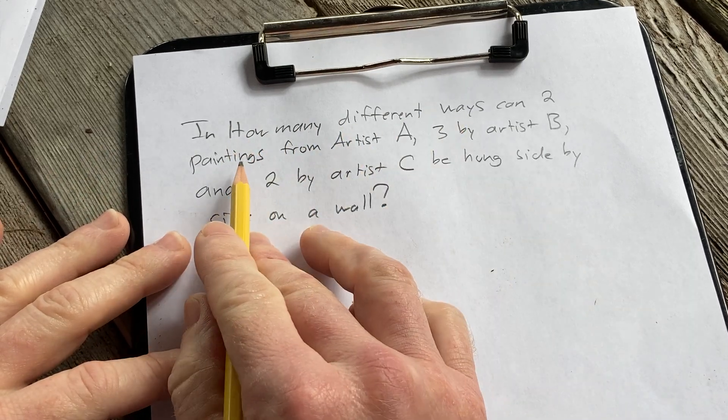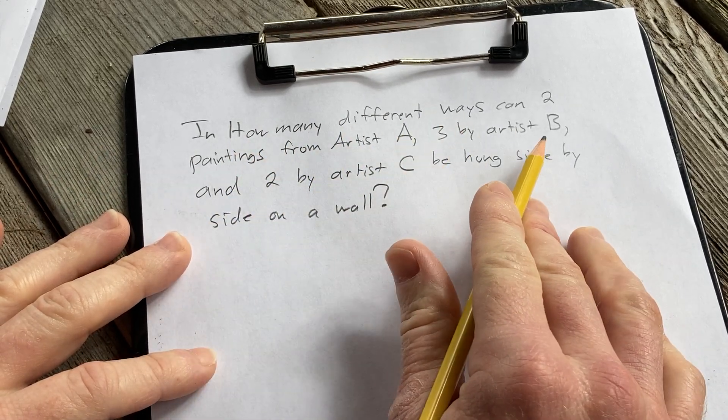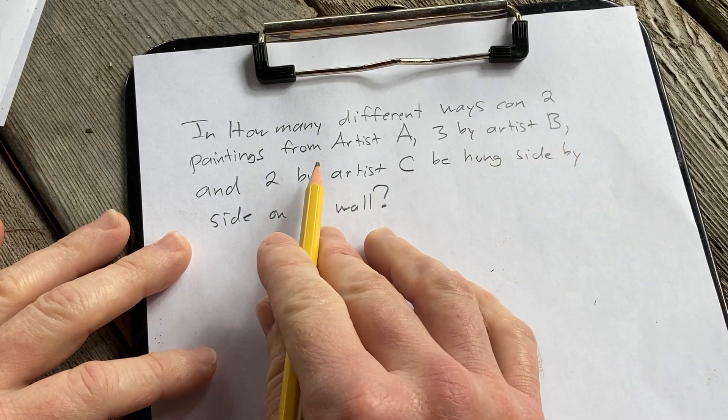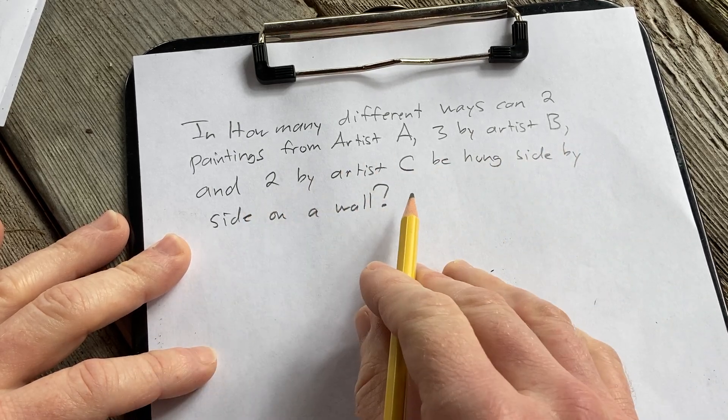In how many different ways can two paintings from artist A, three from artist B, and two by artist C be hung side by side on a wall?